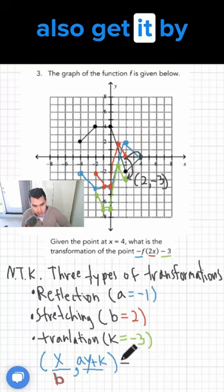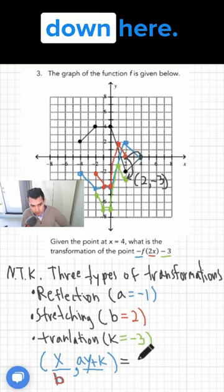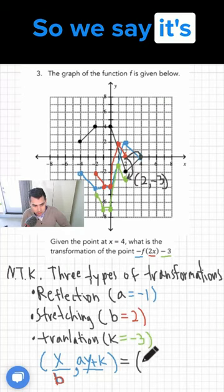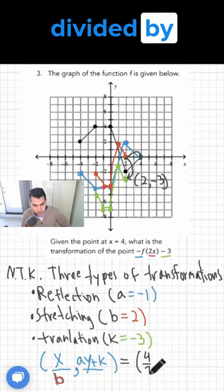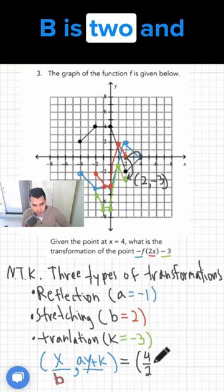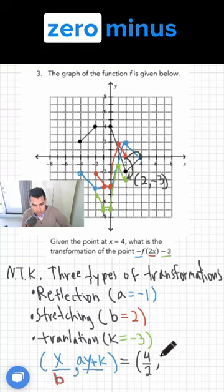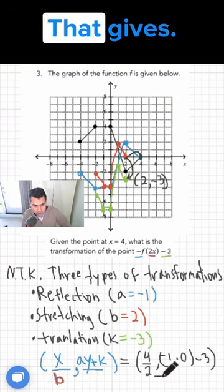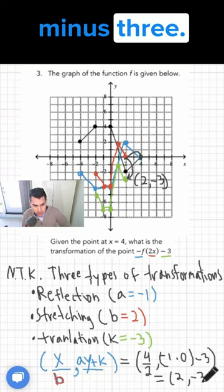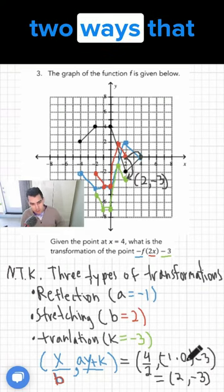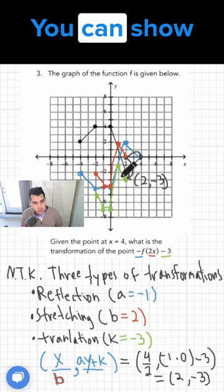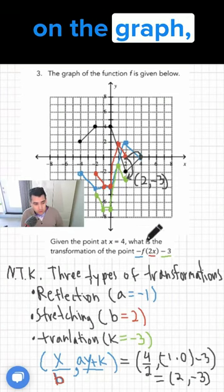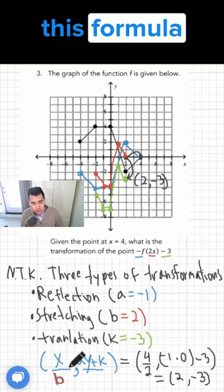You can also get it by the formula down here. So we say it's going to be 4 divided by 2, because b is 2, and -1 times 0 minus 3, that gives -3. So there are two ways that you can show the answer. You can show it by drawing on the graph, or you can use this formula right here.